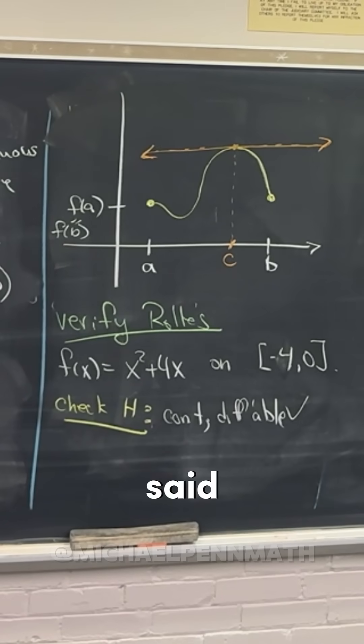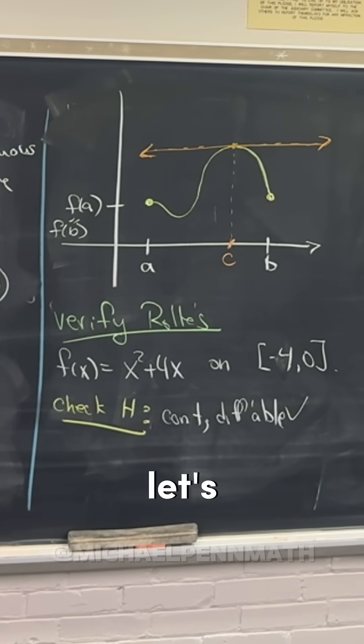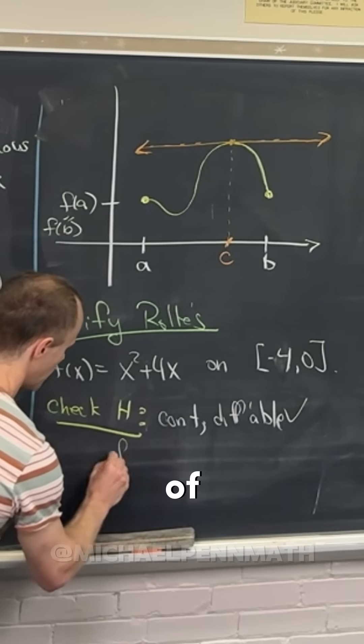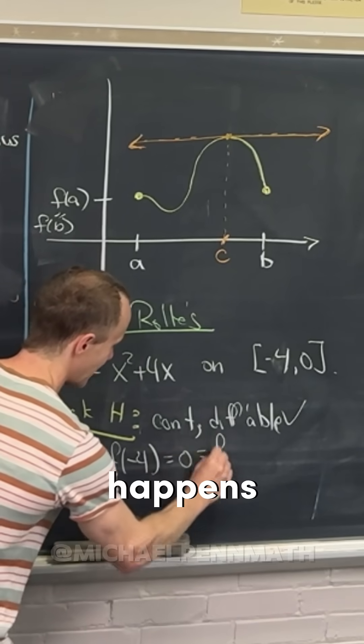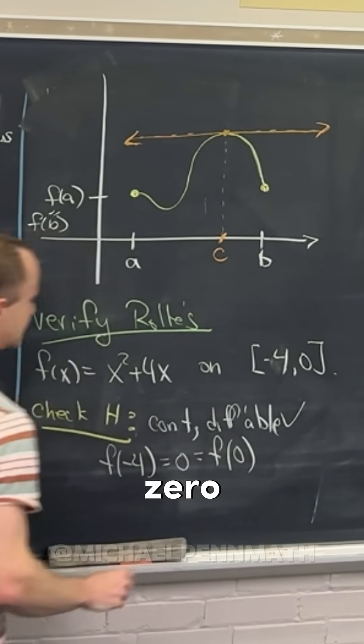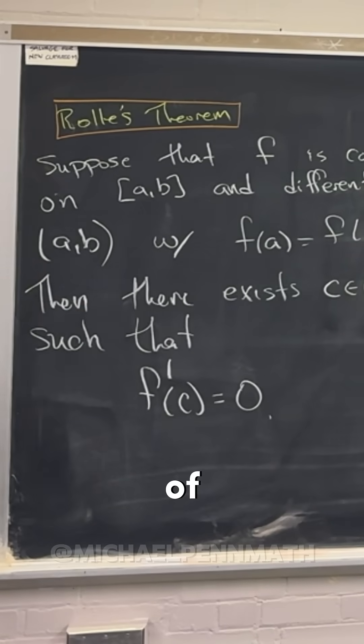And that's because polynomial type functions always have that sort of property. And then let's look at f of negative four, which happens to be zero, which happens to be the same thing as f of zero. So that means this part of the hypothesis is also check.